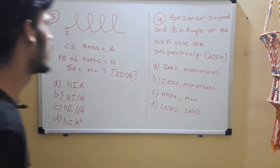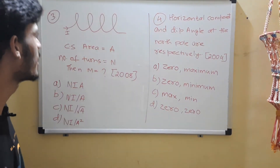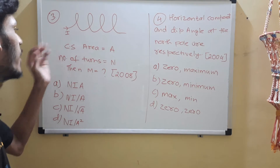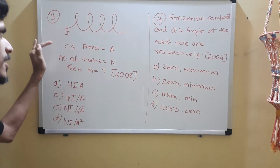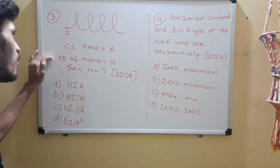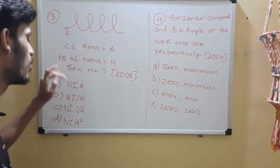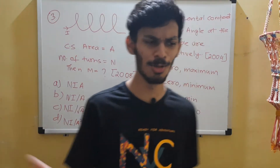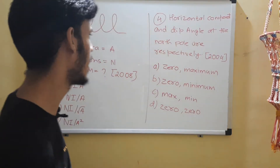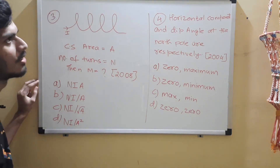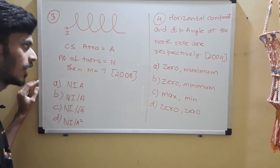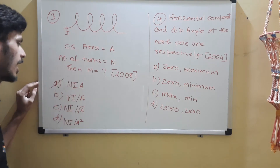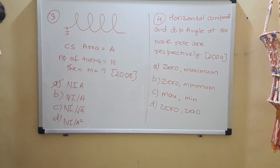Question 3 and 4. In question 3 from 2008, we have a coil carrying current I, with cross-sectional area A and number of turns N. You are supposed to find the magnetic moment of this coil. The correct choice is option A: NIA.